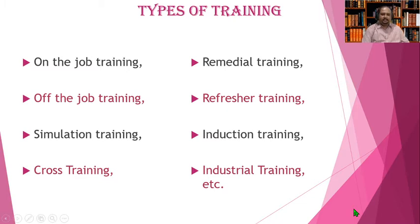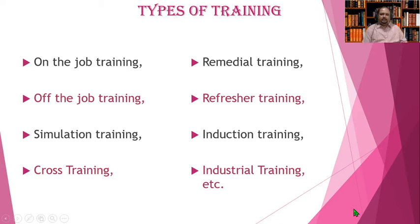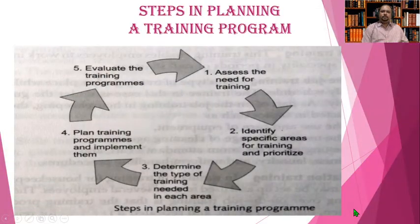Industrial training is when a student goes for practical training and practical exposure in a hotel. When a person joins a hotel as a management trainee, that is also a kind of training. Different types of training can overlap — for example, industrial training is also on-the-job training.